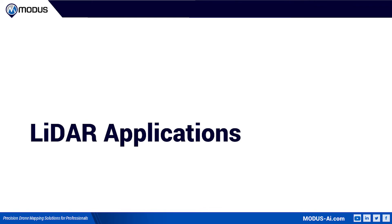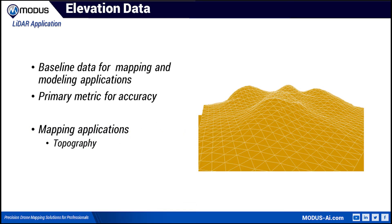There are many applications of LiDAR data. We'll explore several common coastal applications including mapping, vegetation, and modeling. Elevation data is the baseline for all mapping and modeling applications, with accuracy measured primarily in elevation. In mapping land-based elevation data, this is called topography — defined as the general shape or form of the land surface. The power and flexibility of modern LiDAR systems make them excellent tools for mapping topography.